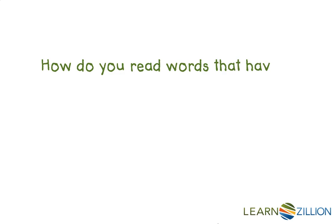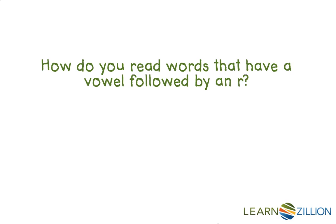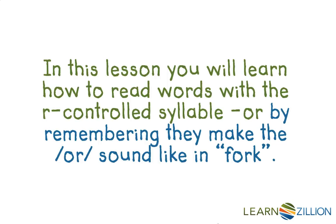How do you read words that have a vowel followed by an R? For example, like this word. In this lesson, you will learn how to read words with the R-controlled syllable OR, by remembering they make the OR sound like in fork.